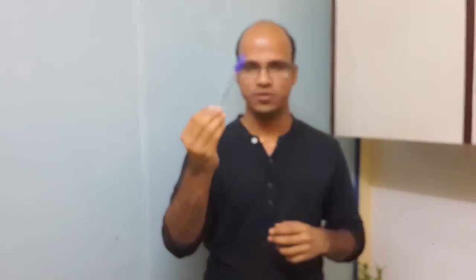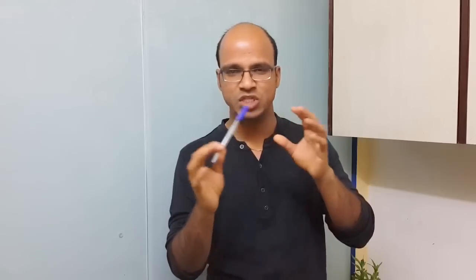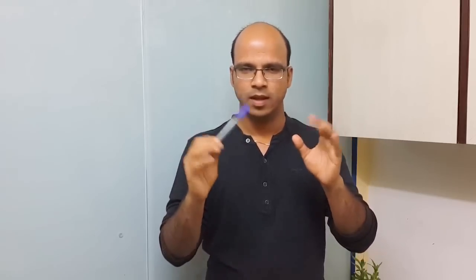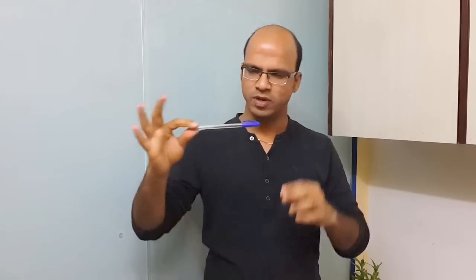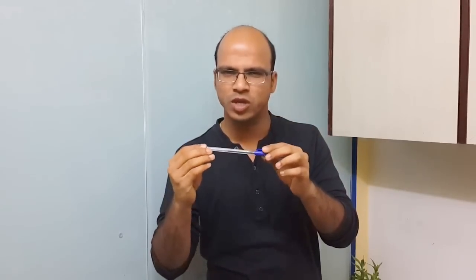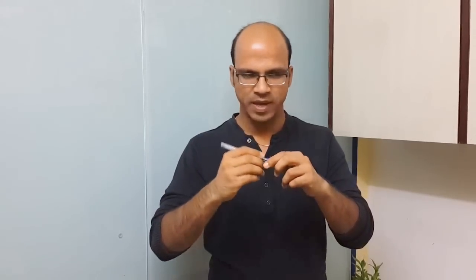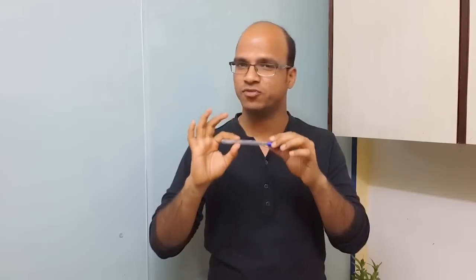Let's go with an example. You have this pen — its main feature is to write. The problem is if you leave this pen here and want to write something, the pen won't move on its own. It's a non-living object. You have to pick it up and write. Same with a matchbox — you have to take a matchstick and light it.